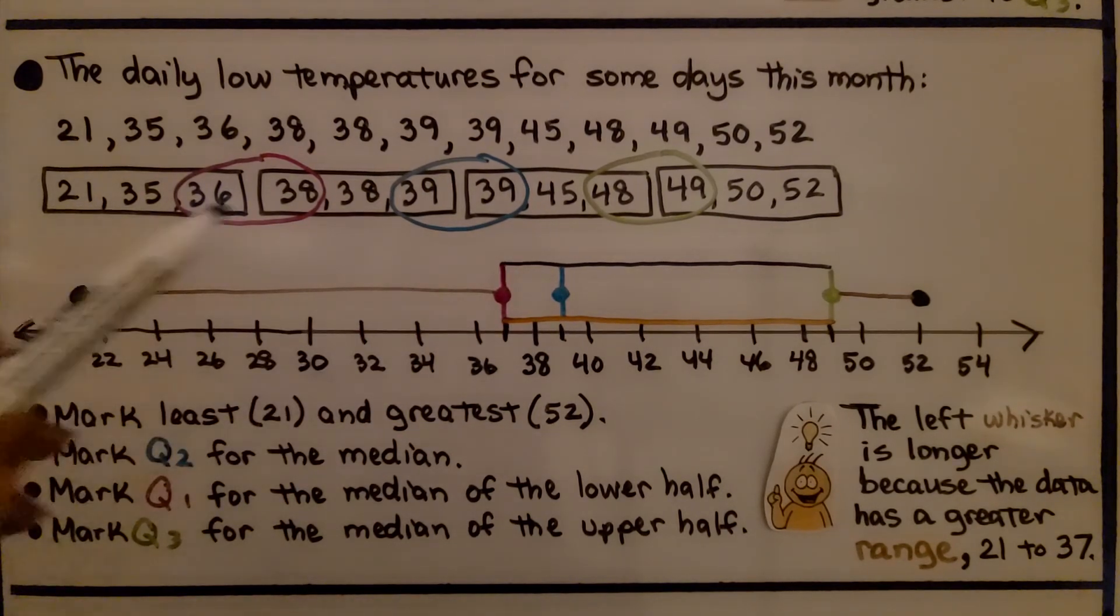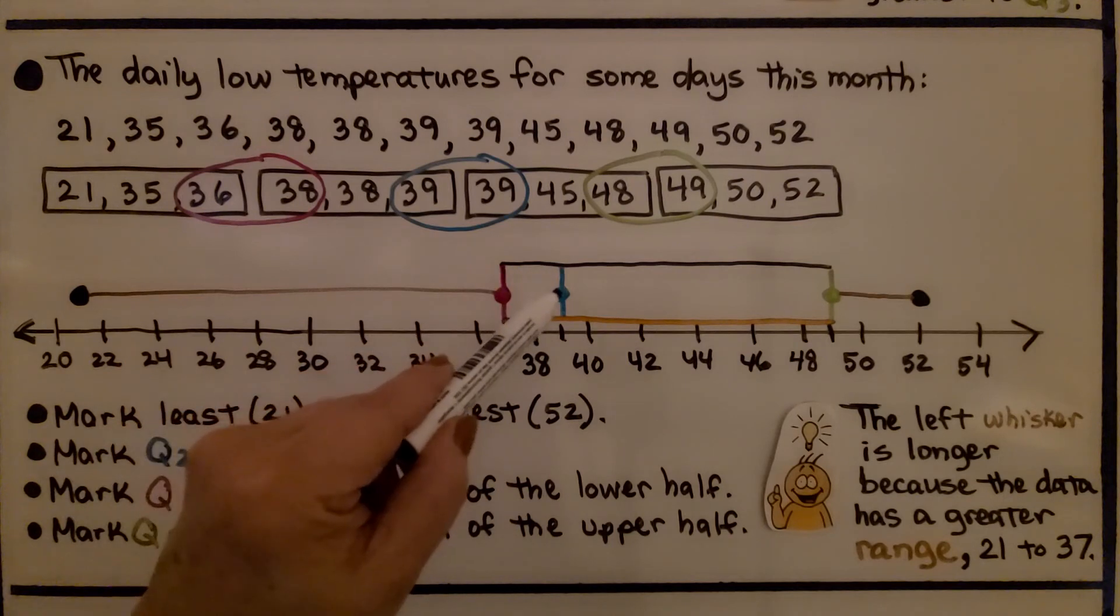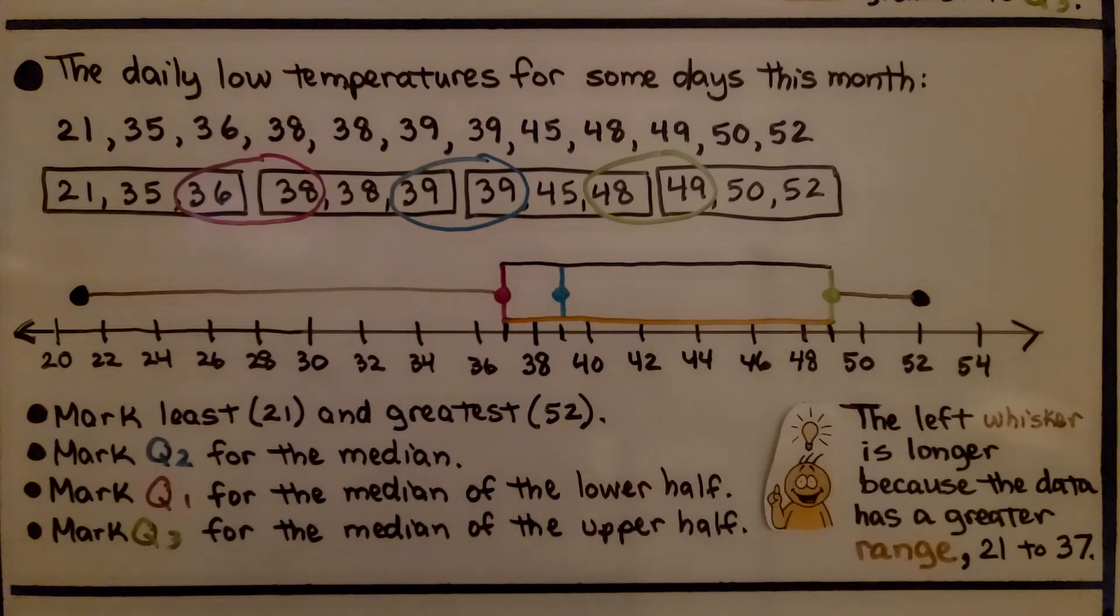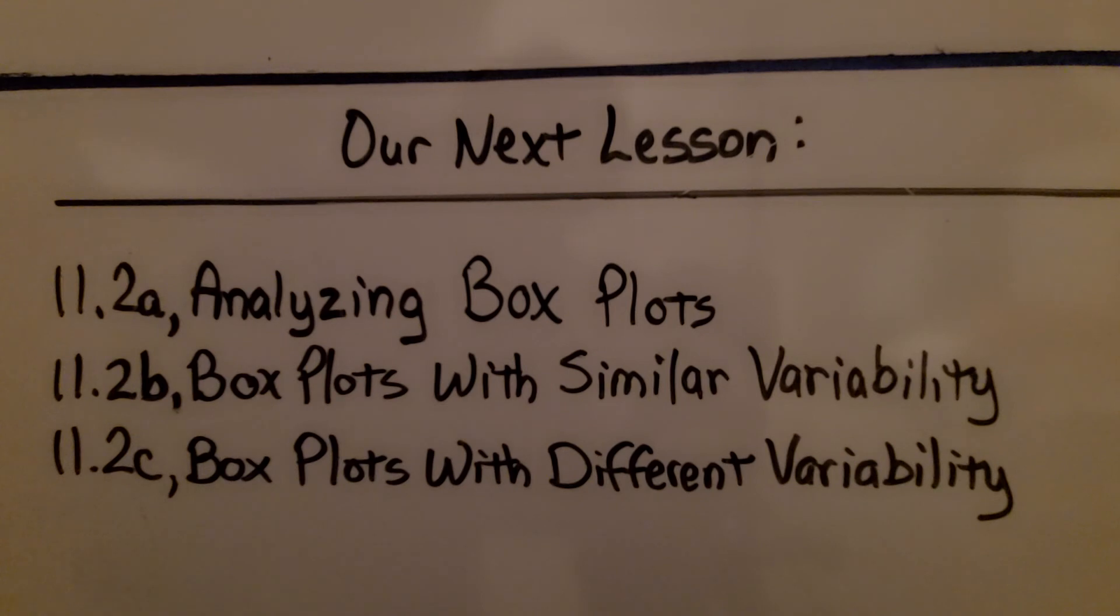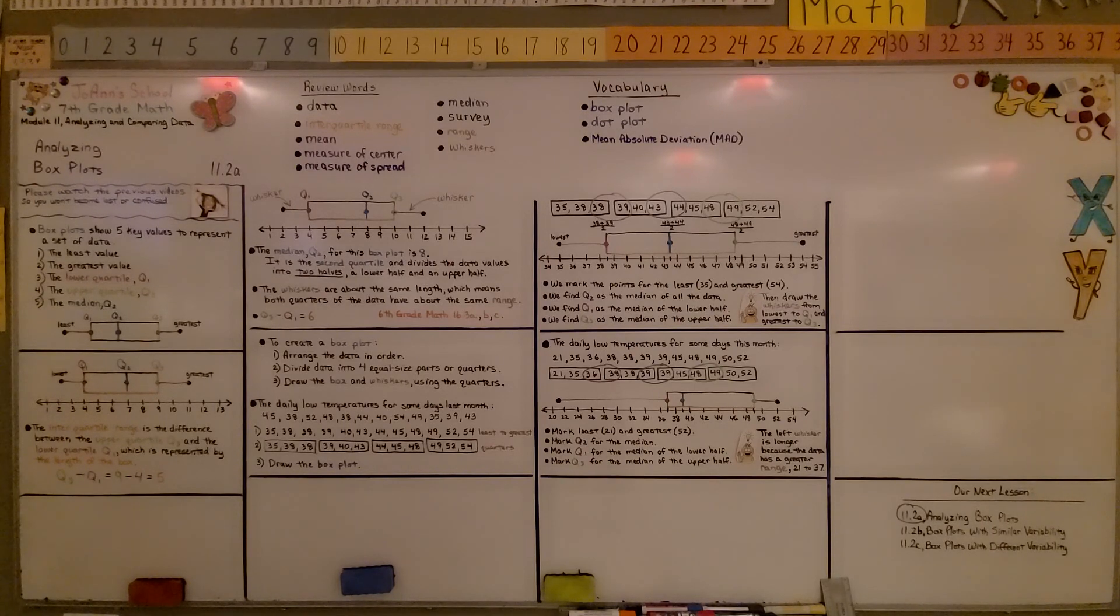We've got lowest, first quarter, second quarter, third quarter, greatest. Okay, we finished the first part of 11.2. We're going to move on to the second part. We're going to talk about box plots with similar variability. If you really want to understand this and you don't quite remember from last year, check out the description and the video links to the sixth grade videos. It'll only take you a few minutes to watch them and then watch this one again. Have a wonderful day and join me for the second part of the lesson. Bye.